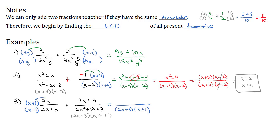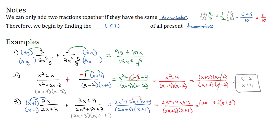In the numerators, we distribute 2x through, giving 2x squared plus 2x plus 7x plus 9. Combining like terms gives 2x squared plus 9x plus 9 over the common denominator of 2x plus 3 times x plus 1. That numerator factors as 2x plus 3 times x plus 3, and since 2x plus 3 appears in both numerator and denominator, it reduces out, leaving x plus 3 over x plus 1 as the final solution.